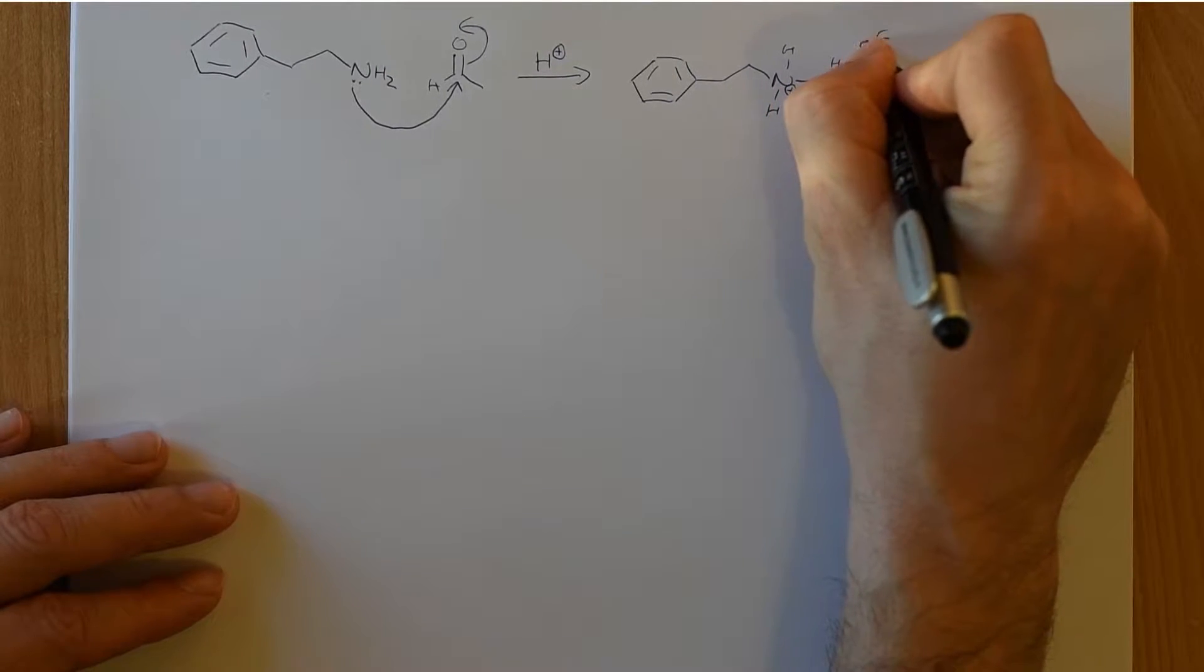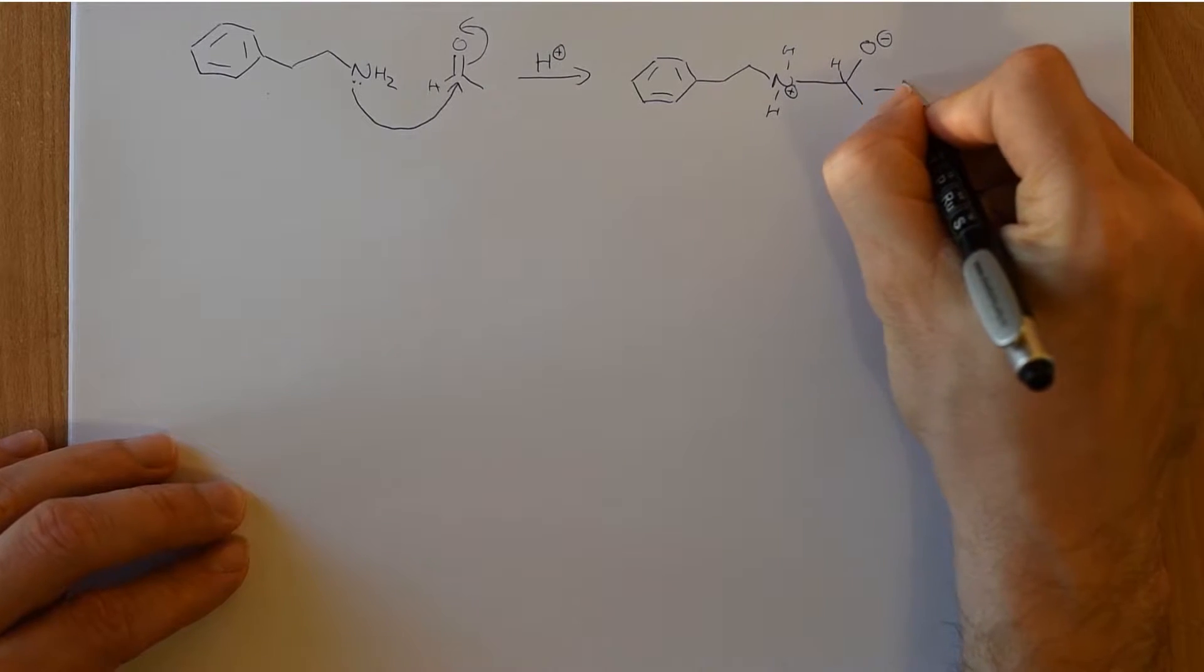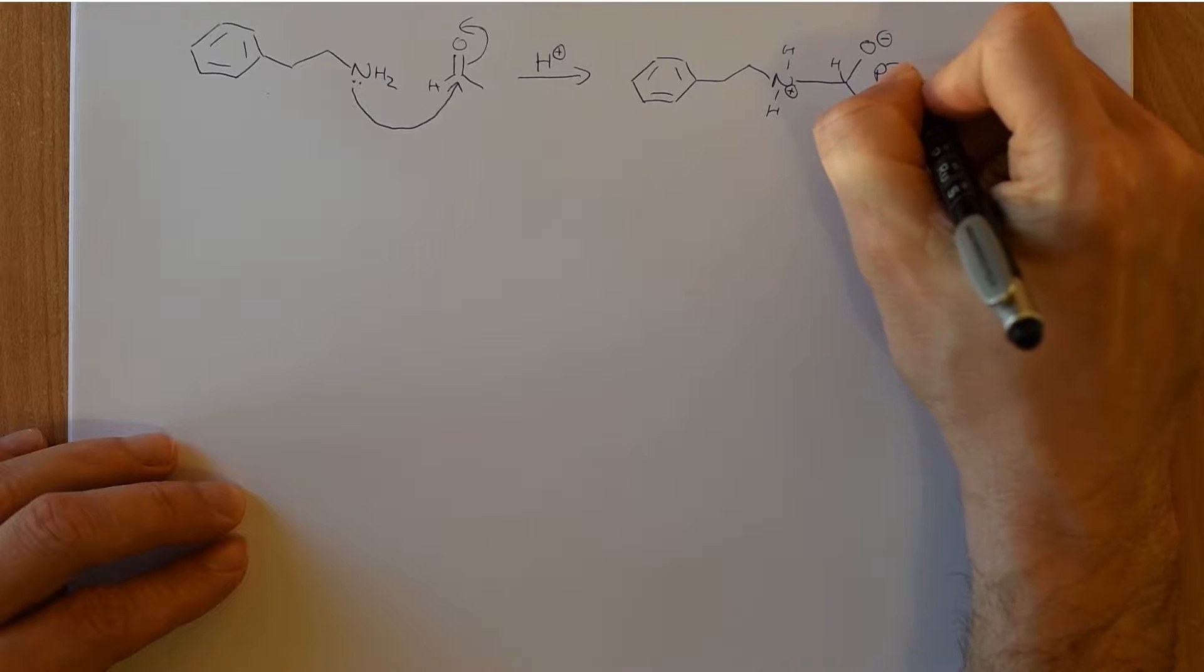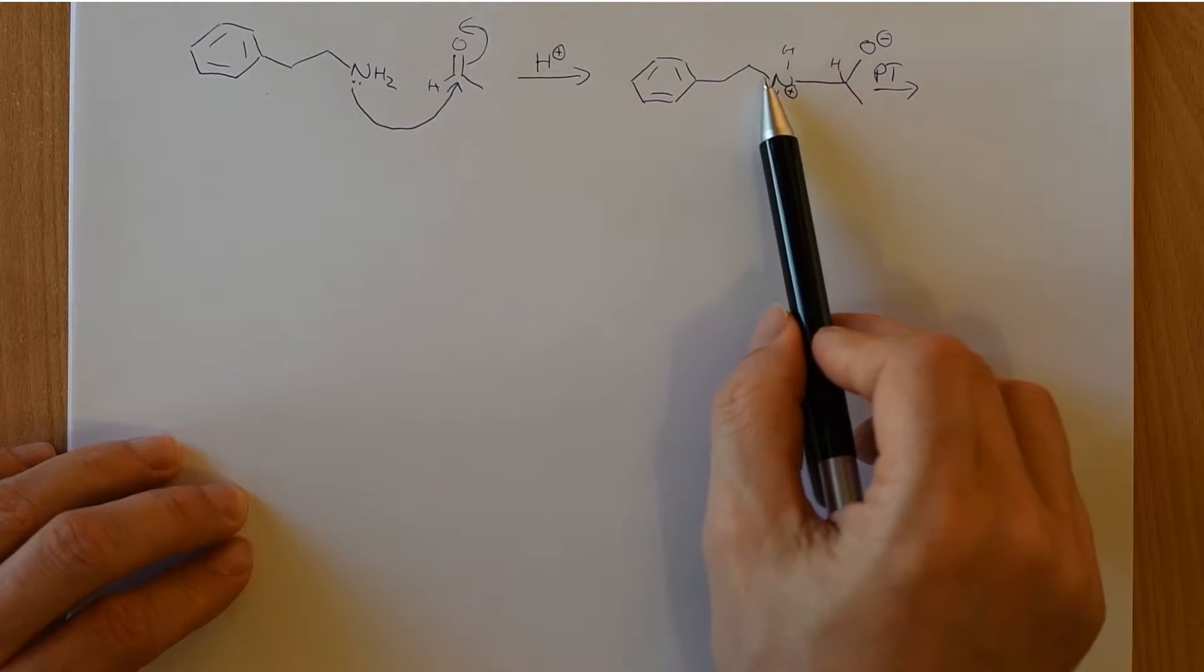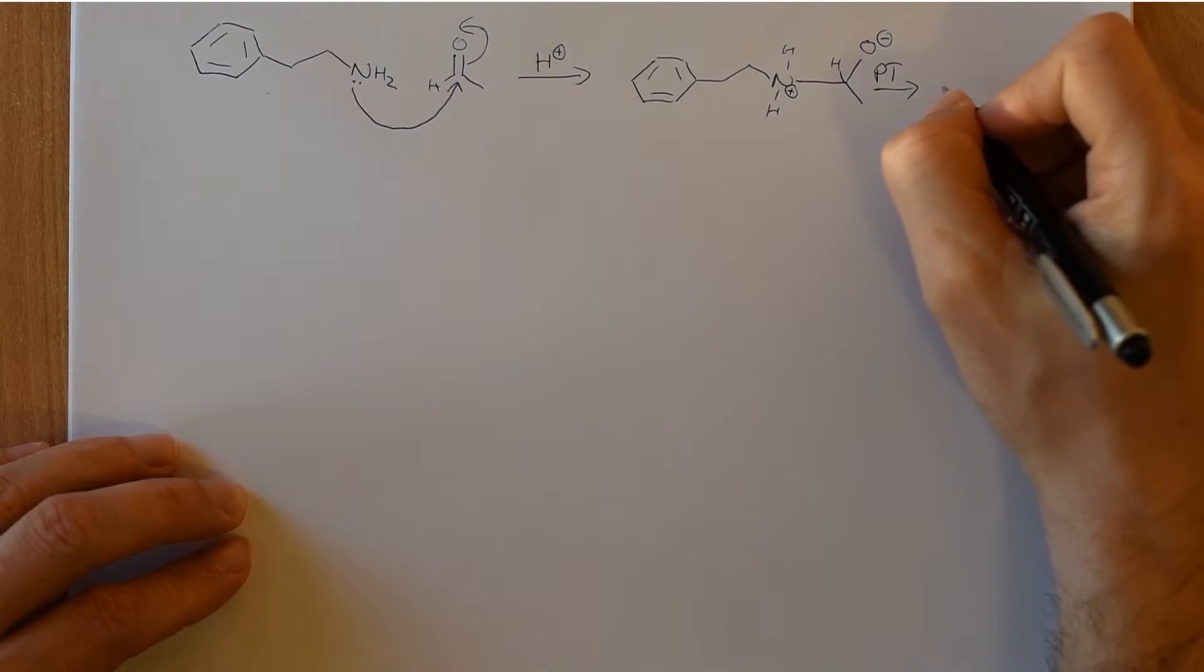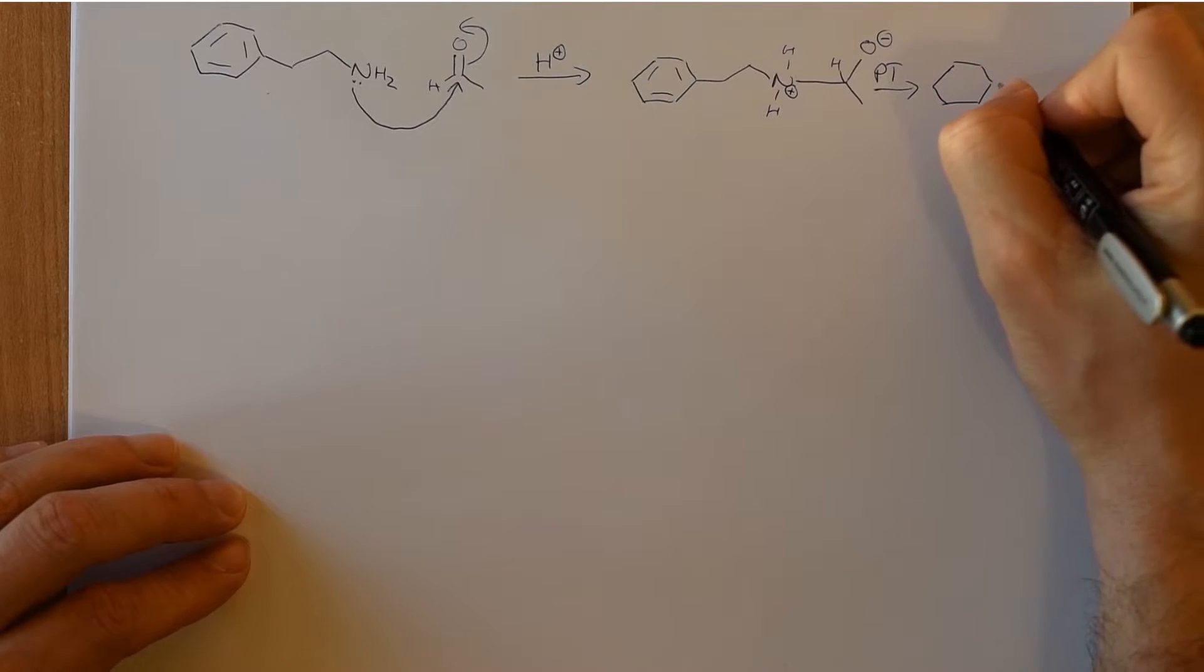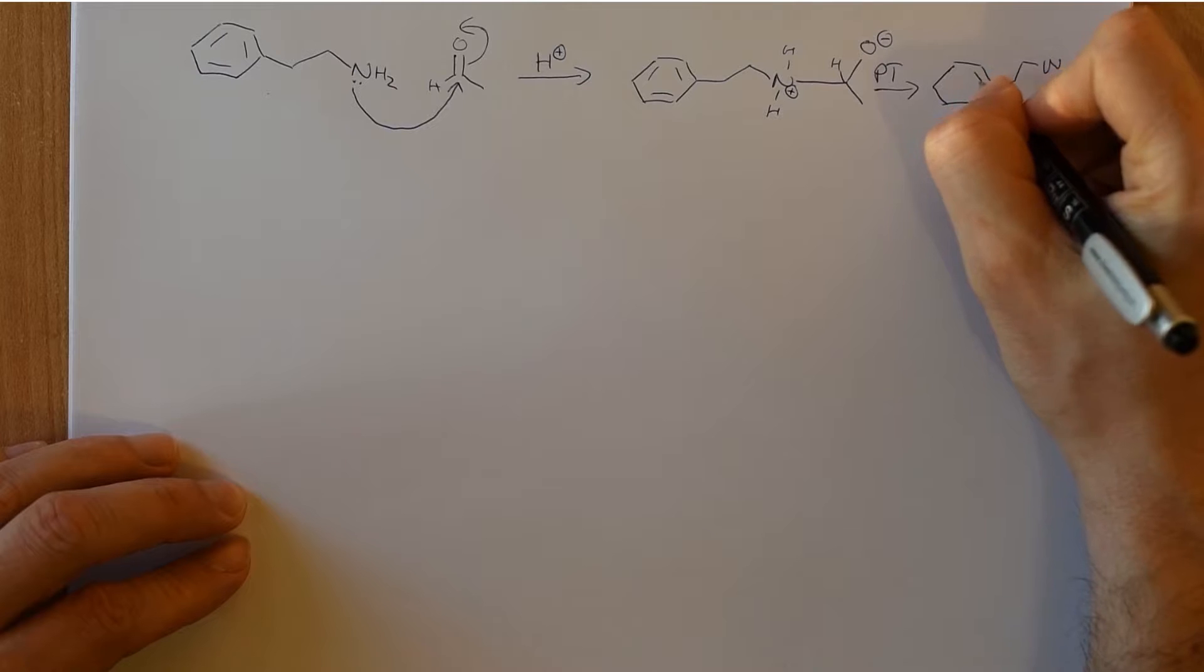Took that pair of electrons, put them up here. Oxygen is now negatively charged. The next thing we are going to do is we are going to do the same thing that happens when you are doing an imine formation, which you do on the way to a reductive amination or indeed a normal manic reaction.